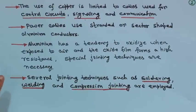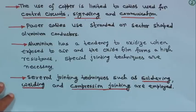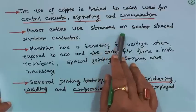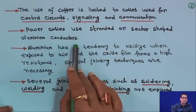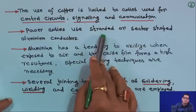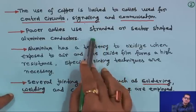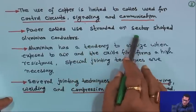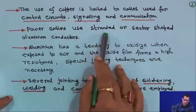The materials employed for conductors are generally annealed copper or aluminium. The use of copper is limited to cables used for control circuits, signaling, and communication. Aluminium is used for power cables — either standard or sector-shaped aluminium conductors. Aluminium has a tendency to oxidize when exposed to air, forming an oxide film of very high resistance.